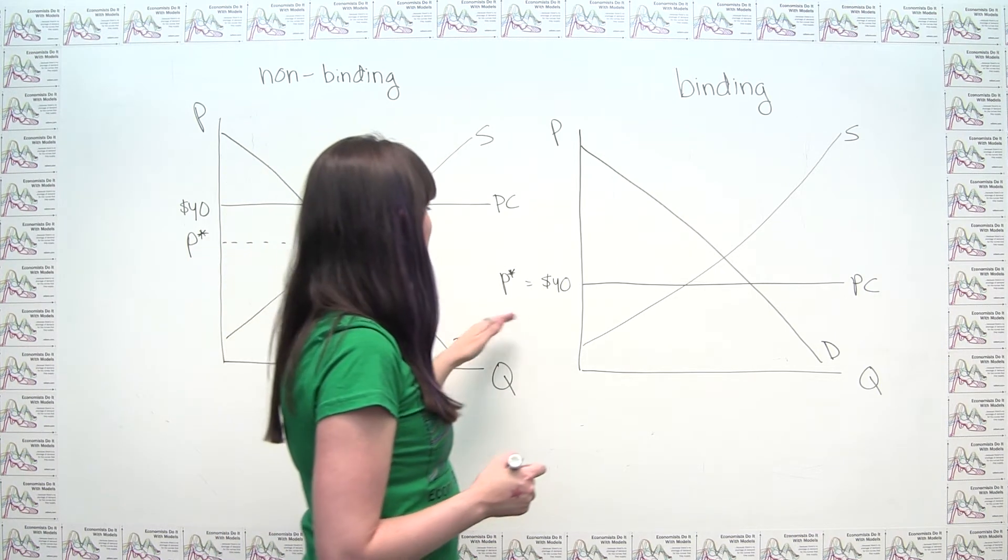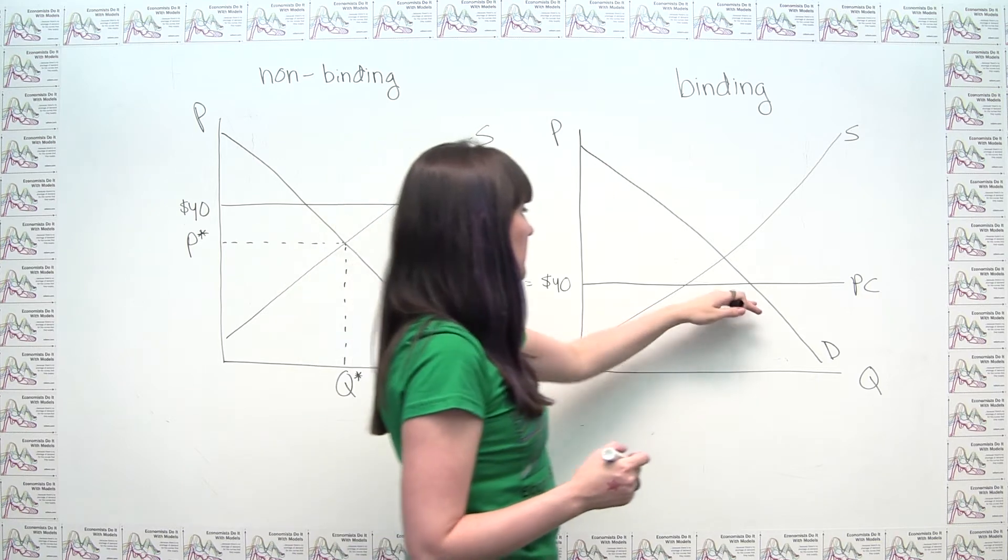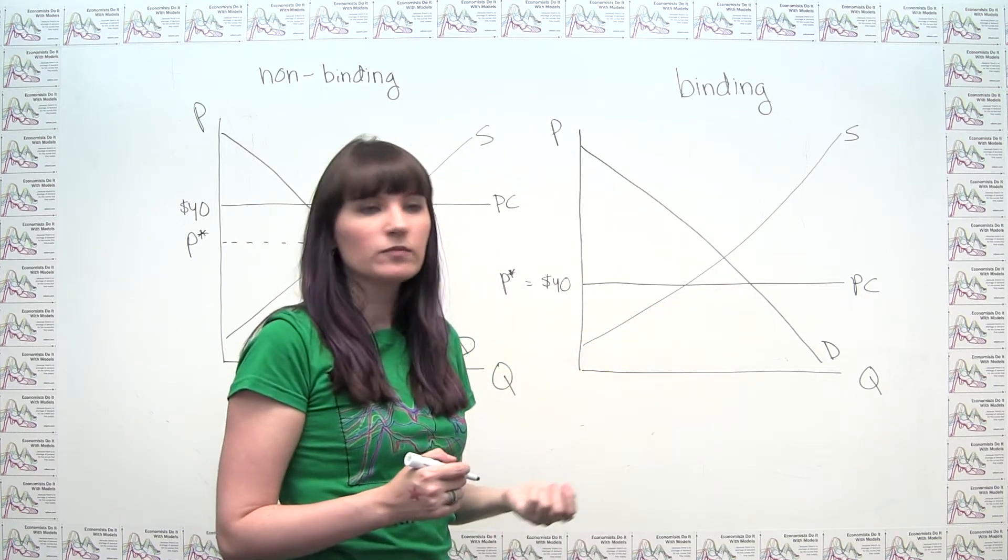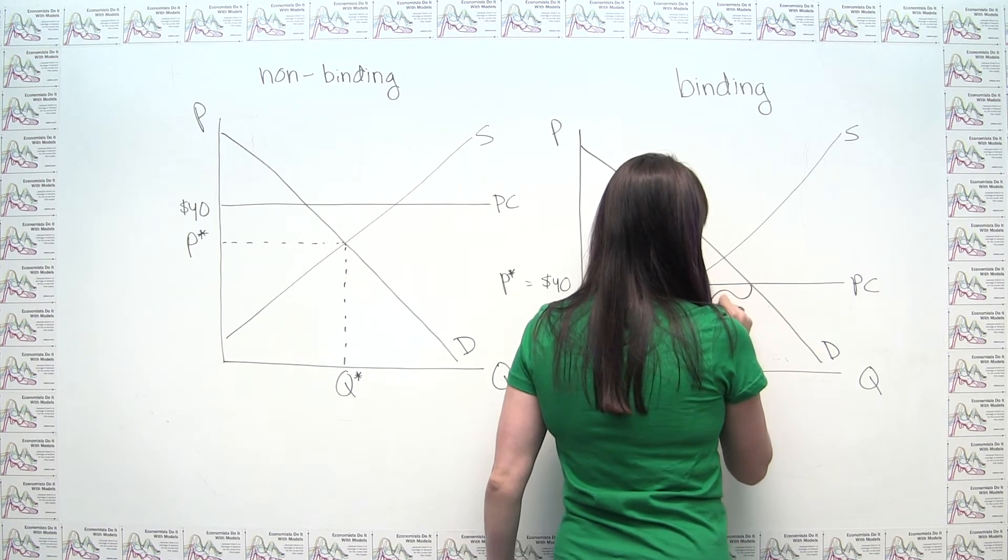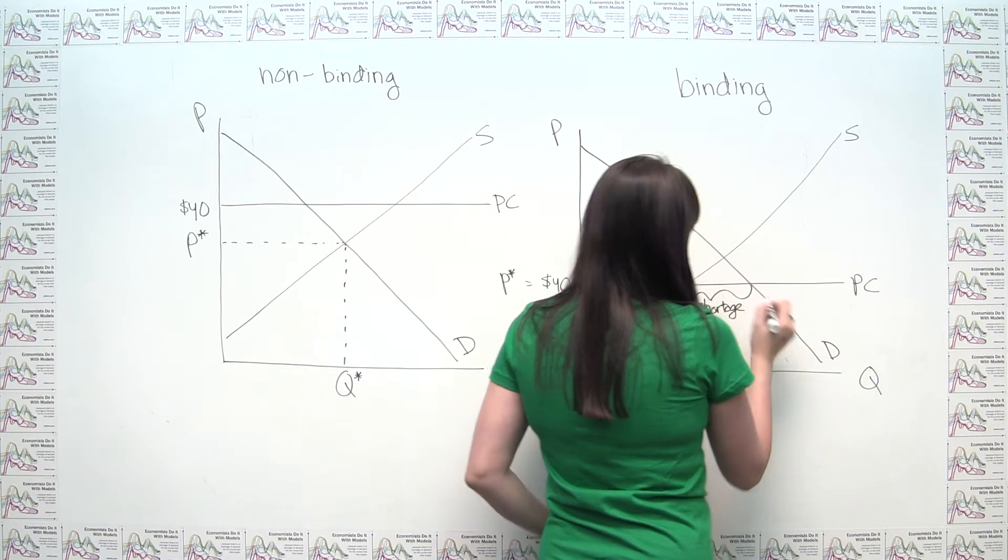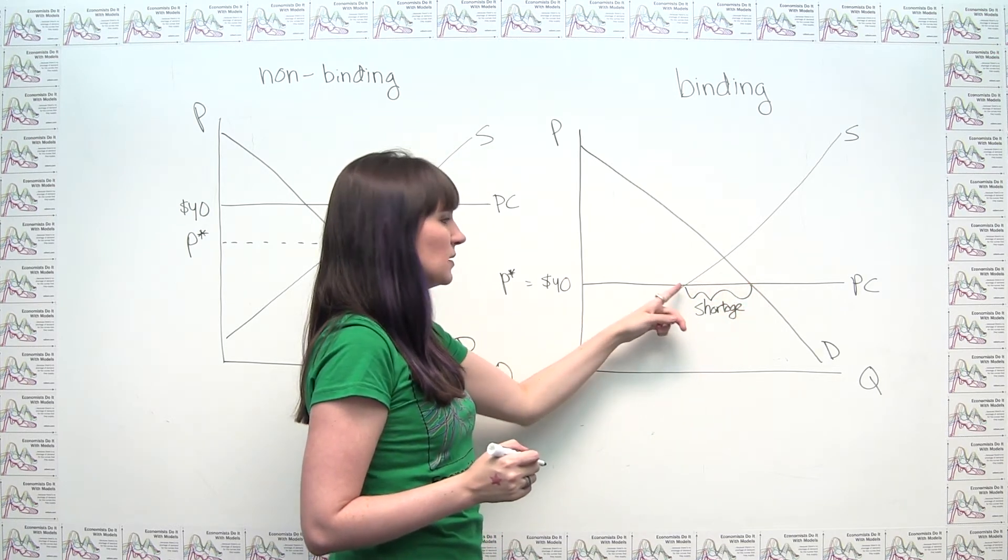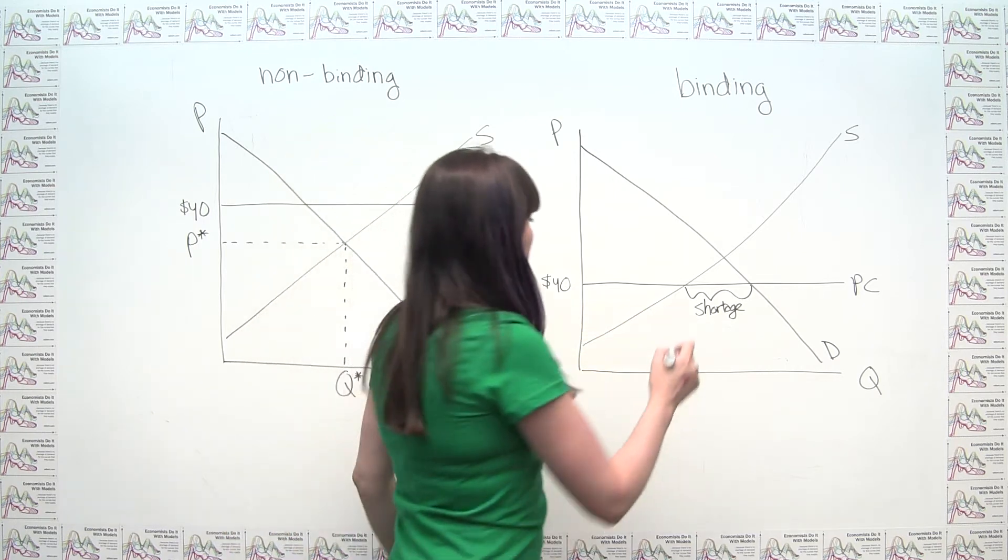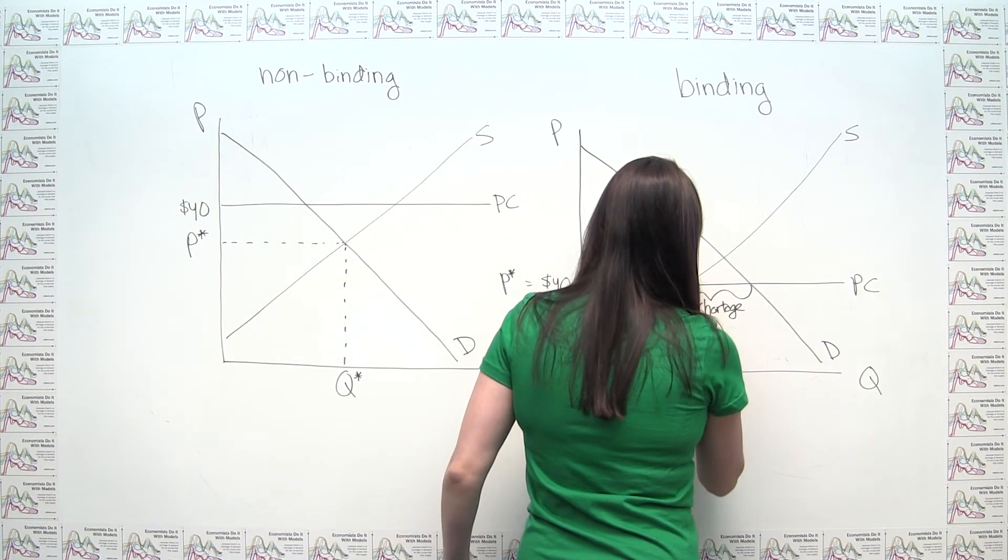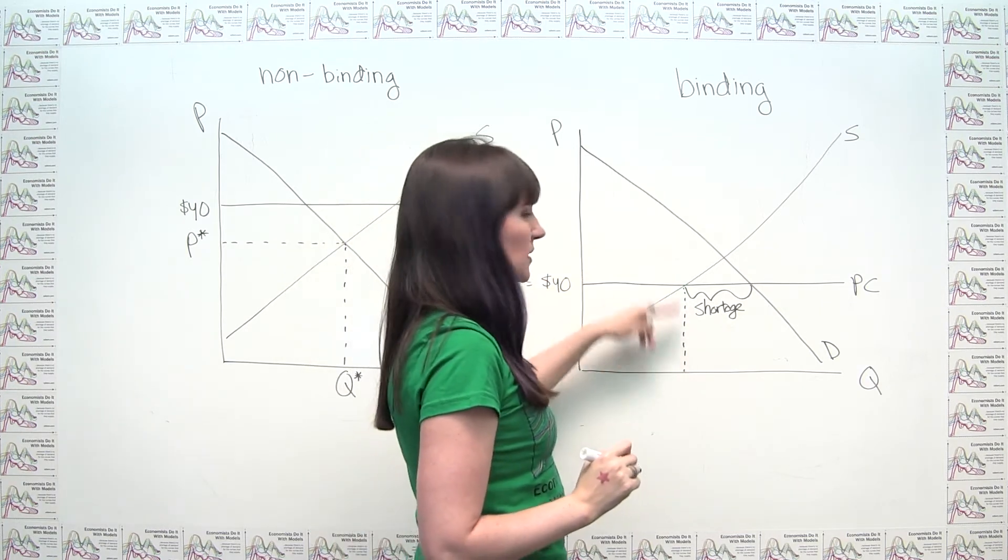And then we can think about at this price, we have an imbalance between supply and demand, right? We have a shortage. You can label this. And the amount of the shortage is just the amount by which the quantity demanded at this price exceeds the quantity supplied at this price. We could also notice that the quantity supplied is just where this price ceiling intersects the supply curve.